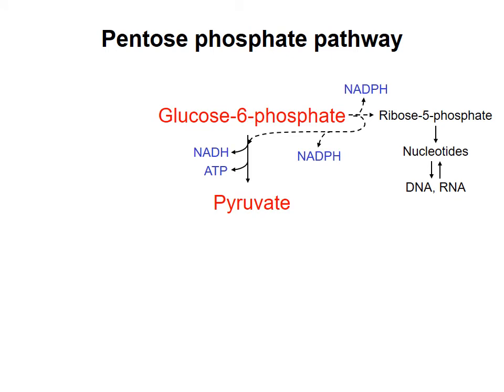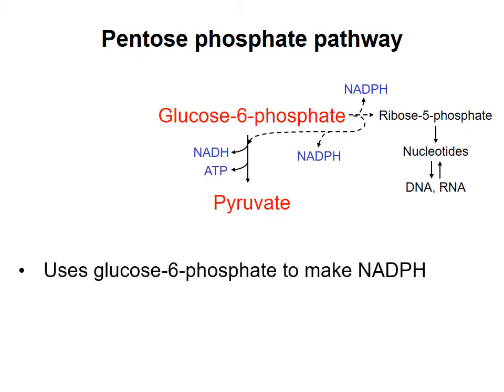You can think of the pentose phosphate pathway as having two major variations. A key point is that in both variations, electrons are transferred from carbon to NAD+, to make NADPH. Recall that NADPH is an electron carrier that usually provides electrons to biosynthetic pathways, so the pentose phosphate pathway can be thought of as promoting biosynthesis.